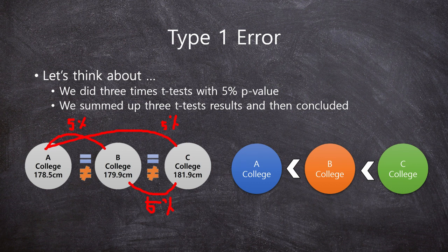And then from the 3 results of the t-test, we summed all the t-tests, right? And 5% p-value, right? Here.